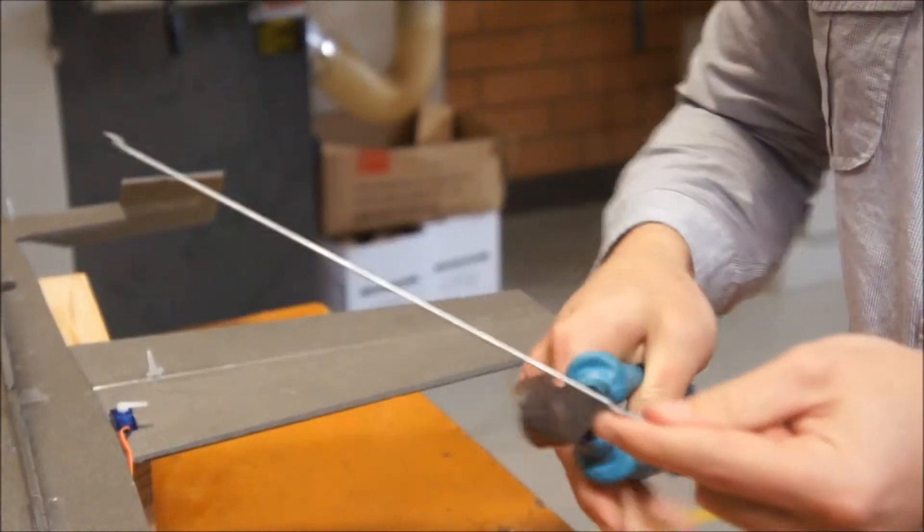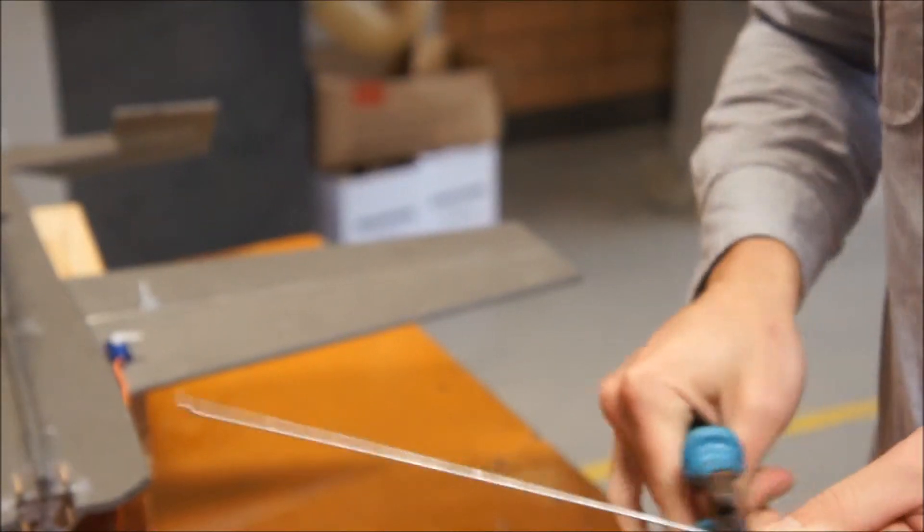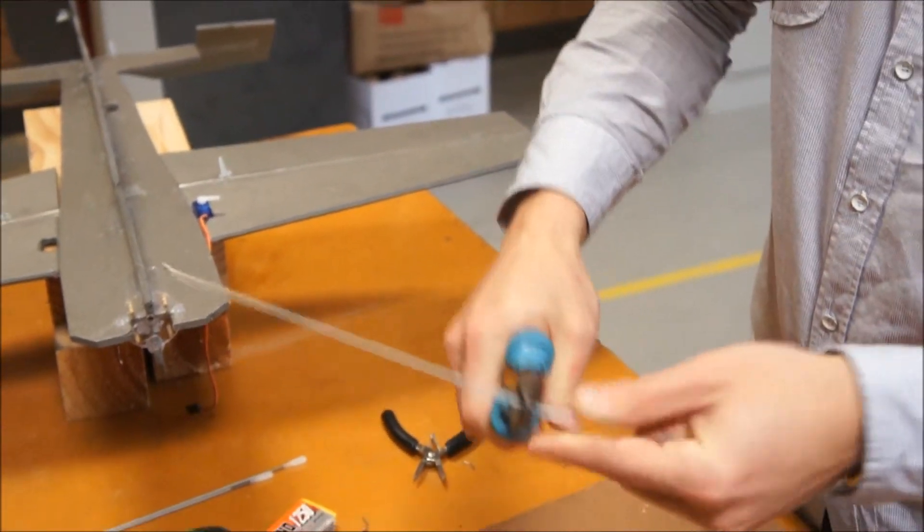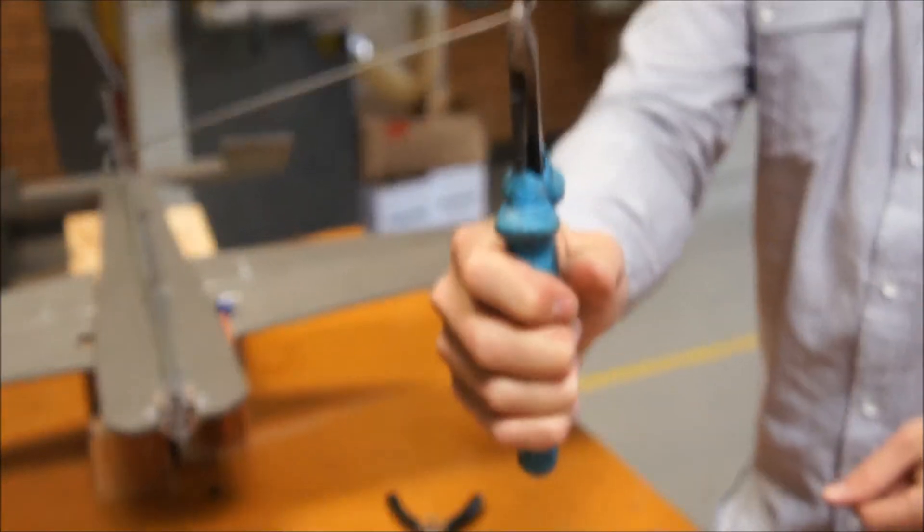And I'm just going to chop that off, leaving a little bit of a tail on so that it doesn't want to sort of jump up out of the control arm. So that's about where I'm going to chop it there.